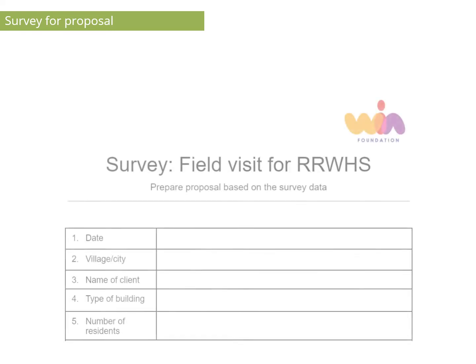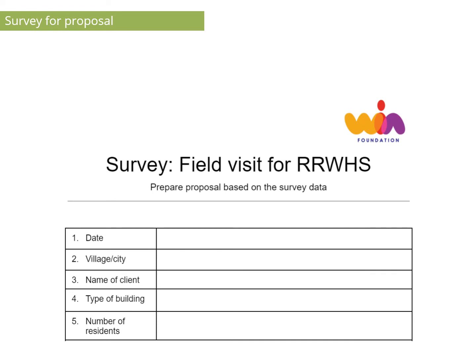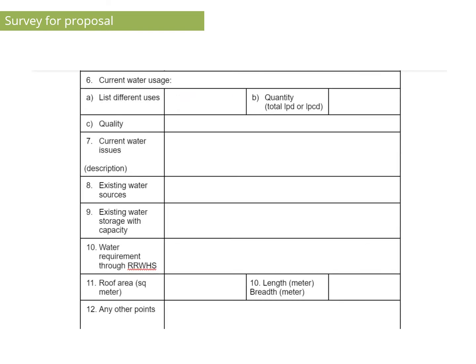Here is the sample format of the information to create the proposal. The proposal contains the date, village or city, name of the client, type of building, and number of residents. The format also includes important points like current water usage — that is drinking, bathing, washing, and gardening — and how much quantity of water is being used.